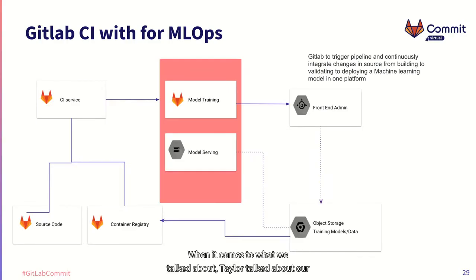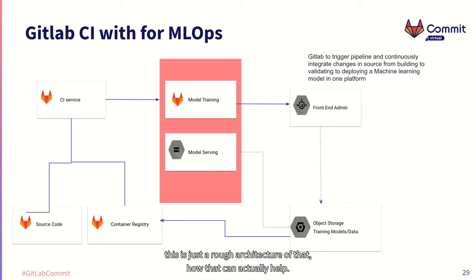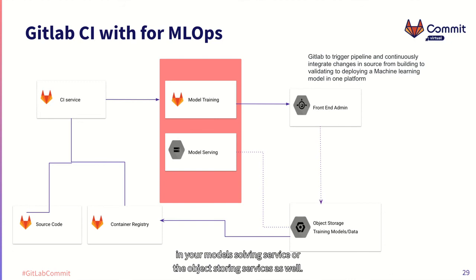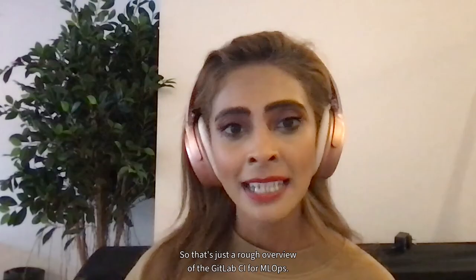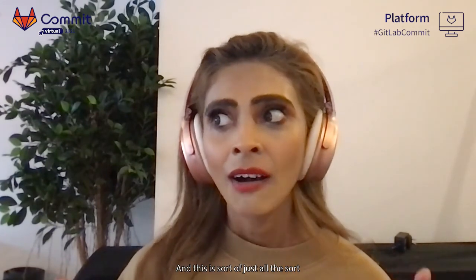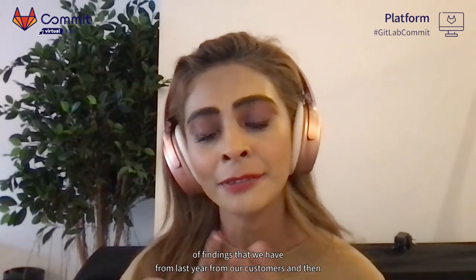Taylor talked about our GitLab Runners and how we've enabled GPU support. Here's a rough architecture of how that works: GitLab with our CI service can trigger the pipeline and continuously integrate changes — all the way from source code, to CI service, to using the GPU in GitLab Runner to train models. We can help with the CI/CD of MLOps, which can be integrated with your frontend, your model serving service, or object storage services.